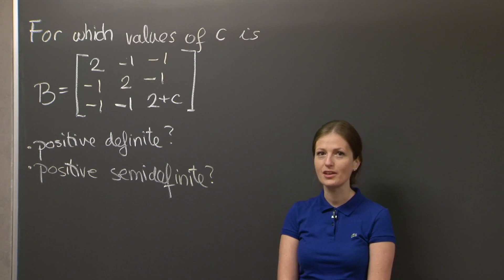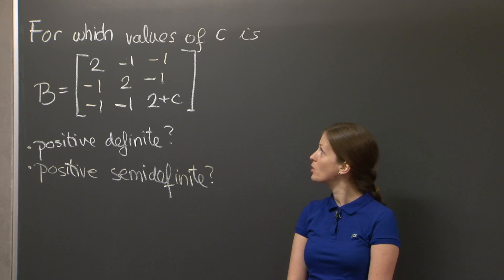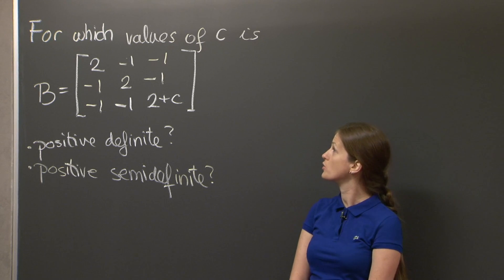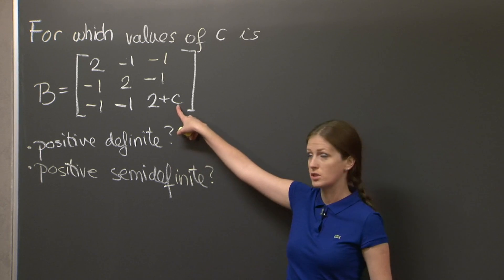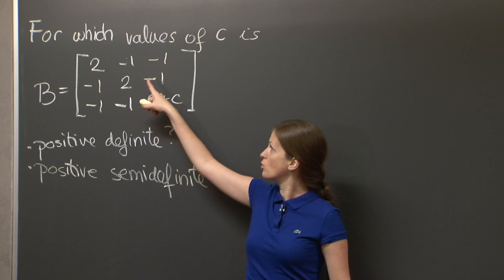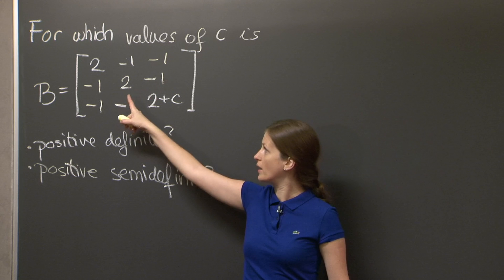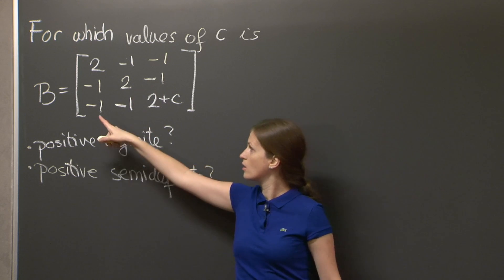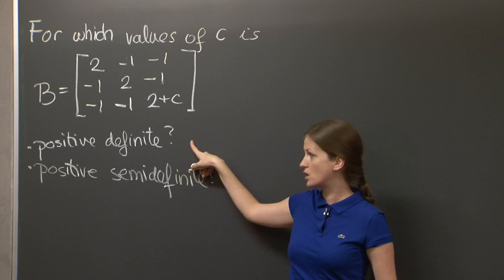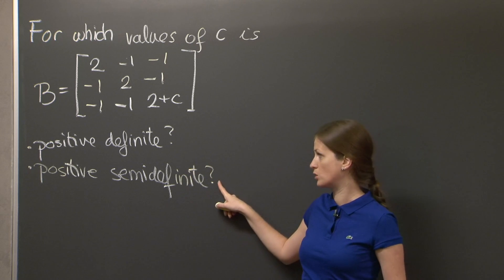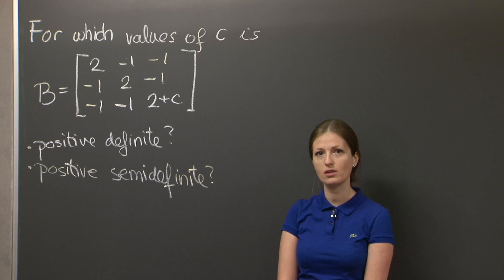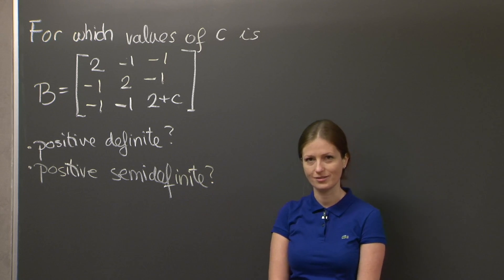Hi. Welcome to recitation. Today's problem is about positive definite matrices, and it's asking us for which values of the parameter c, which is sitting here in a matrix, is the matrix B — 2, -1, -1, -1, 2, -1, -1, -1, 2+c — positive definite, and for which values of c is it positive semi-definite? I'm going to leave you alone with the problem. You should pause the video and then come back and compare your solution with mine.